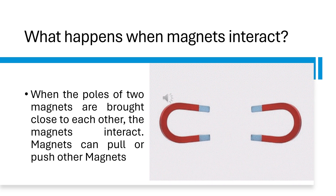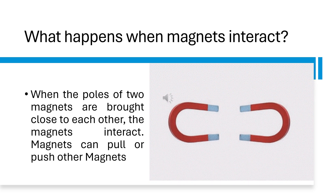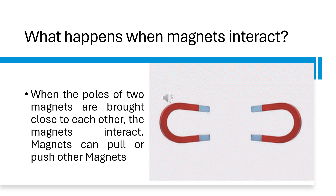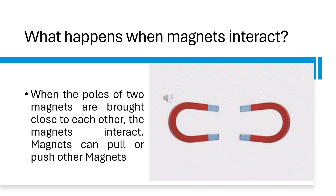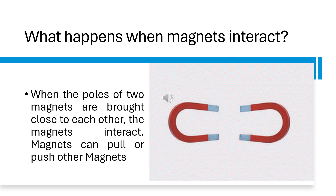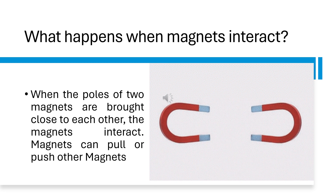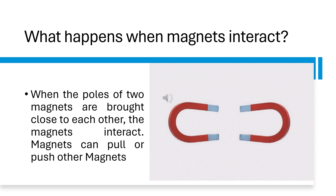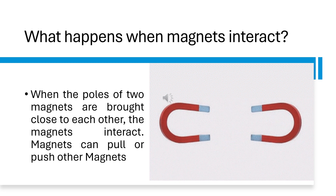What happens when magnets interact? When two poles of two magnets are brought together close to each other, the magnets interact. Magnets can pull or push other magnets.